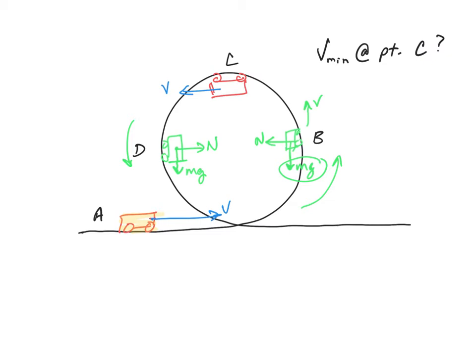So it's speeding up as it goes down. It's going slower and slower and slower until it gets to the top. So I show my velocity vector here at the top shorter than it was down there at the bottom.